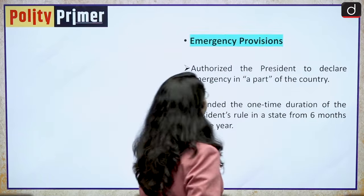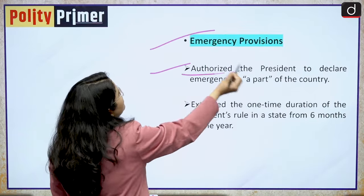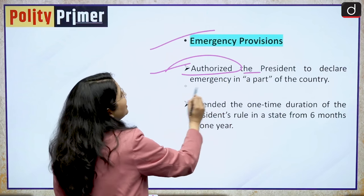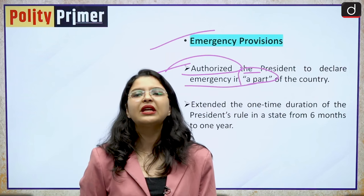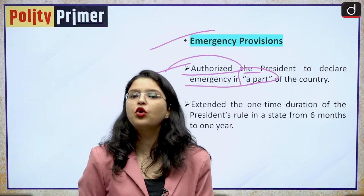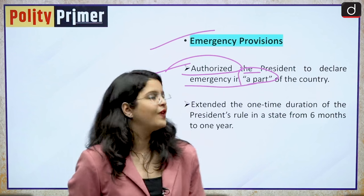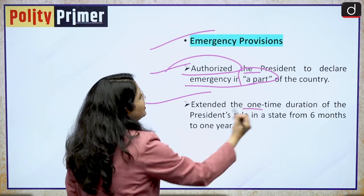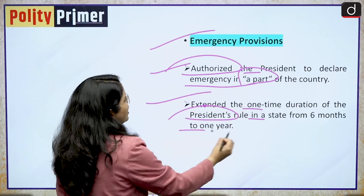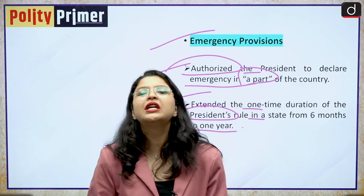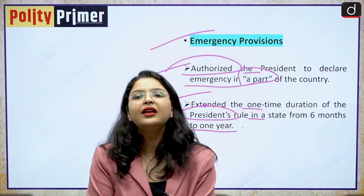Moving forward to the emergency provisions. This amendment authorised the President to declare emergency in a part of the country — so it was not necessary to declare emergency in the whole country; emergency could be declared in part of the country as well. It also extended the one-time duration of President's rule in a state from six months to one year. These were some huge changes made in the declaration of emergency in the country.